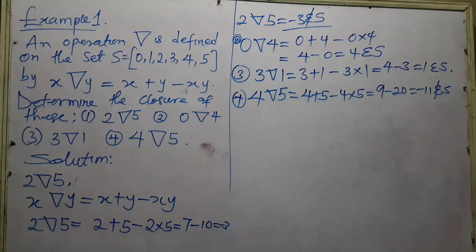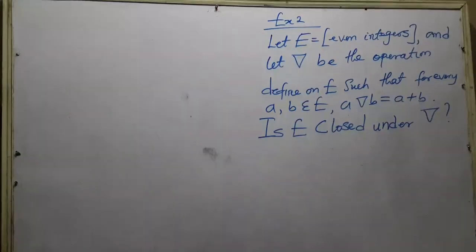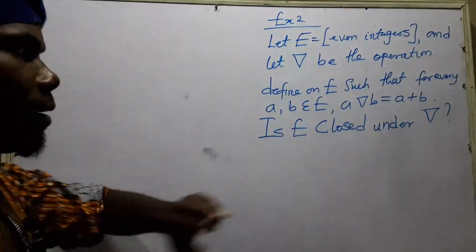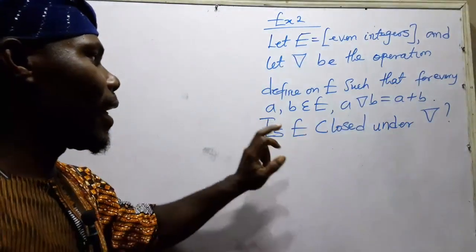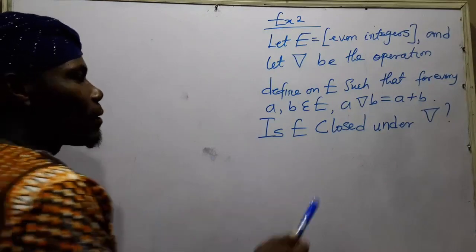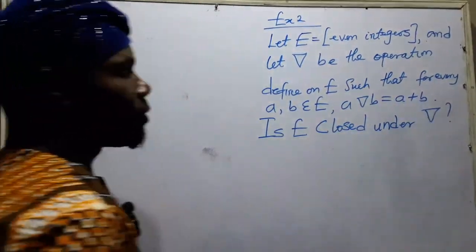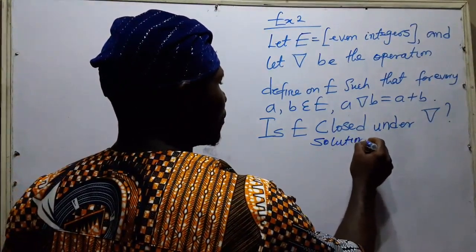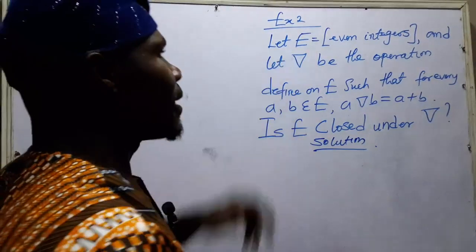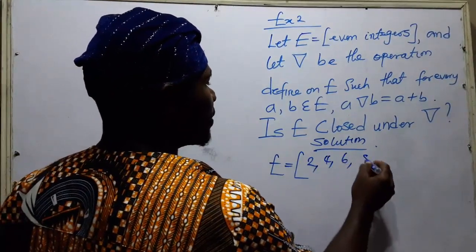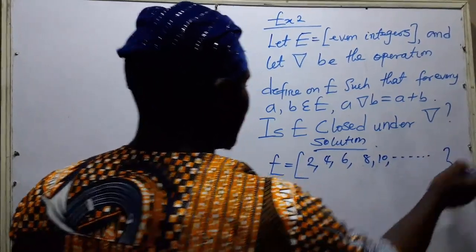Let's try another example. Let E equal the even integers. Let the asterisk operation be defined on E such that for every A, B elements of E, A operation B equals A plus B. Is E closed under this operation? The even integers are: 2, 4, 6, 8, 10, and so on to infinity.